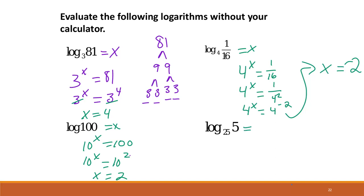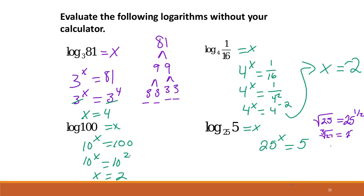Finally, if we say log base 25 of 5 equals x, then 25 to the x equals 5. Since 5 is the square root of 25, and a square root is the same as raising to the 1/2 power — or 1/3 for a cube root — 25 to the x equals 25 to the 1/2. So x equals 1/2.